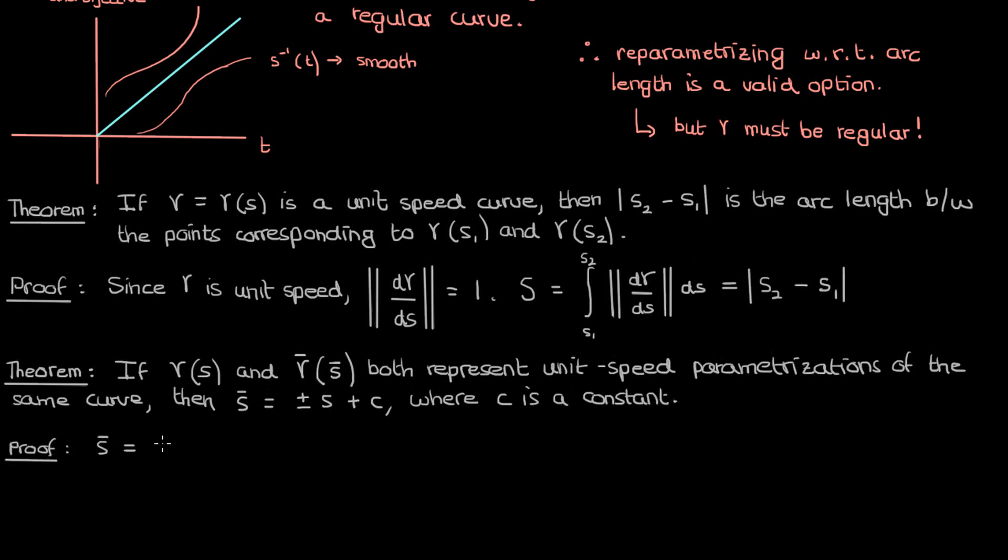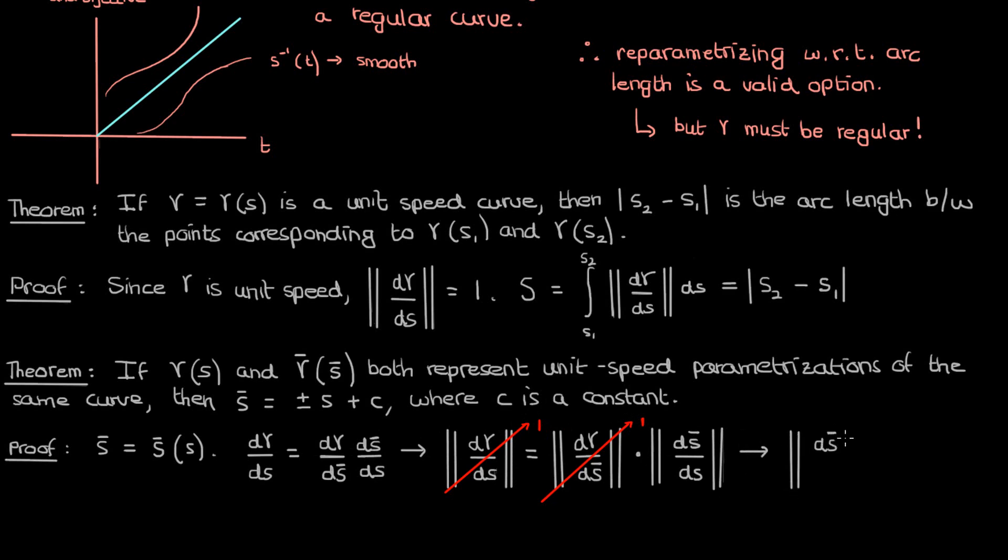To prove this theorem, we'll use the fact that there's a valid reparametrization relationship between s and s̄. If we differentiate the function γ with respect to s, we'll get dγ/ds̄ times ds̄/ds by the chain rule. If we now take the magnitudes of both sides, here's what we'll end up with. And since both parametrizations with respect to s and s̄ are unit speed, that just means the magnitude of ds̄/ds is 1. And as a result, ds̄/ds itself, once we take out the magnitude, can be either positive or negative 1.